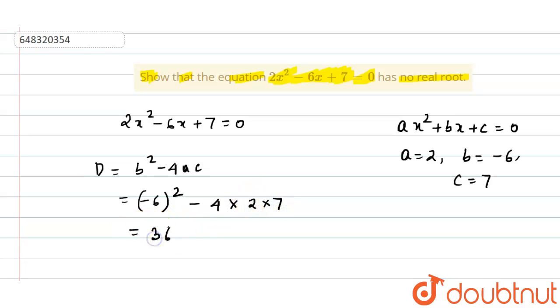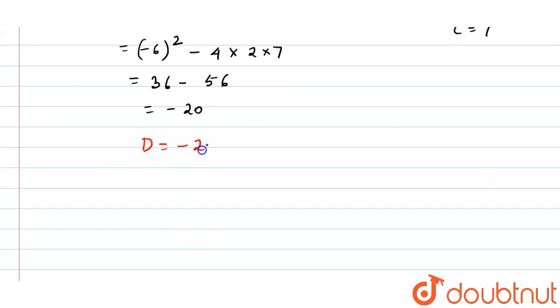So we get 36 minus 8 into 7 that is 56 that is equals to minus 20. So D equals to minus 20 which is less than 0. So no real roots exist. Roots are imaginary.